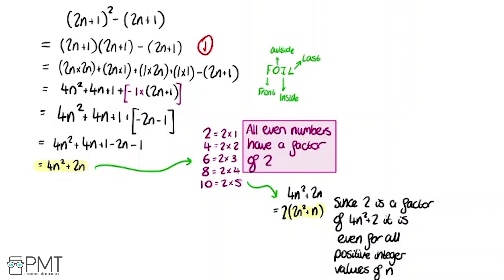So we get one mark for correctly starting to go through the process of expanding the brackets. We get our second mark for getting through that process correctly and getting down to 4n² + 2n. We get our third mark for a convincing conclusion. So in this case, showing that 2 is a factor and explaining that here.